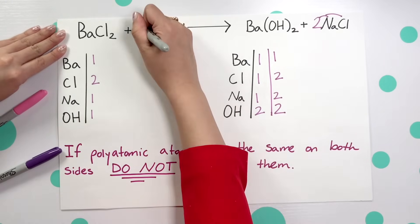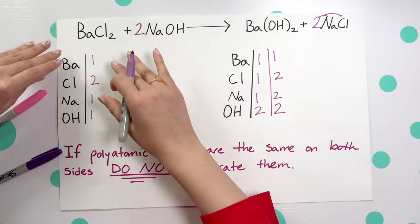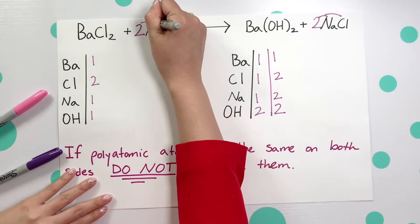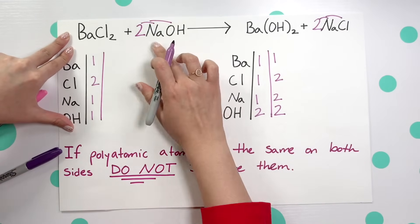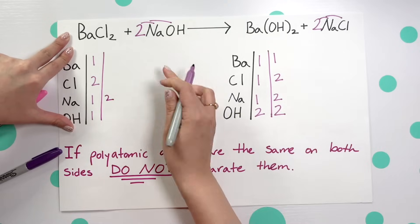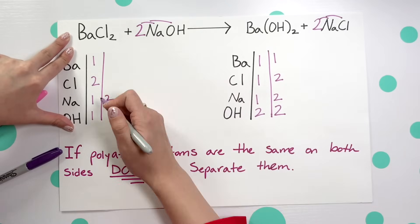So we need two on our reactant side. This would then distribute to both, and we'll see that this affects our Na because we now have two on that side and we have two OHs. Everything else remained the same and we're balanced.